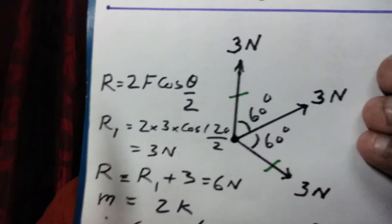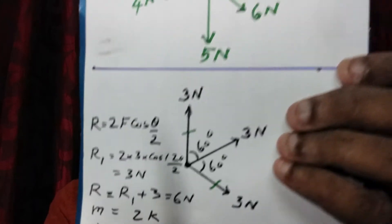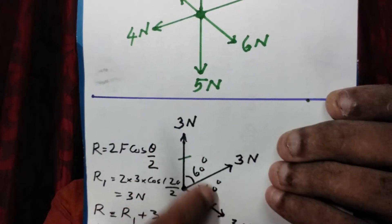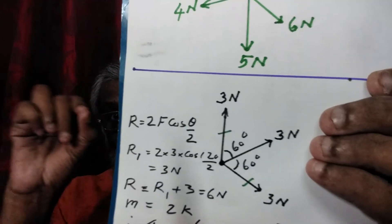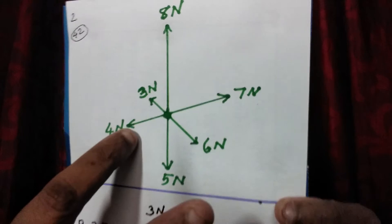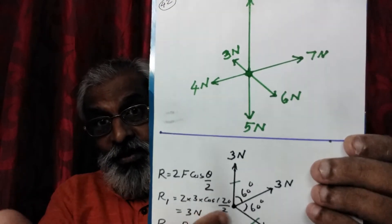The resultant uses 2F cos(theta/2). When forces are equal and opposite, they cancel. The remaining resultant direction is along the 8 Newton force, with value computed from the net components.